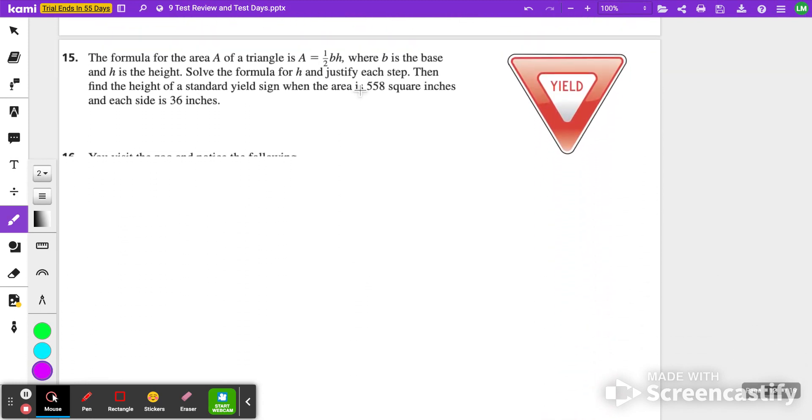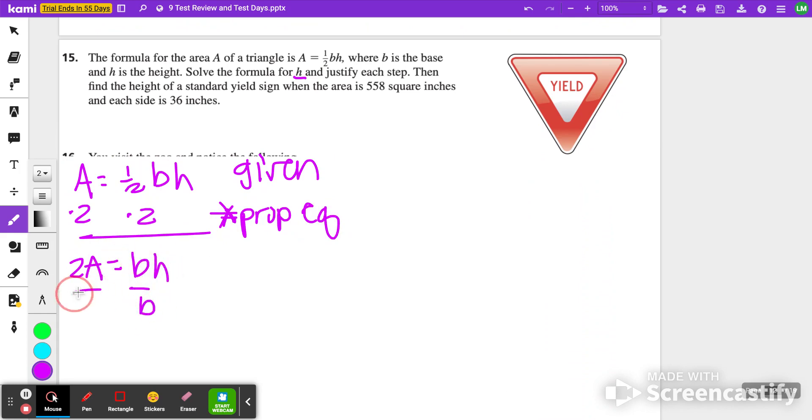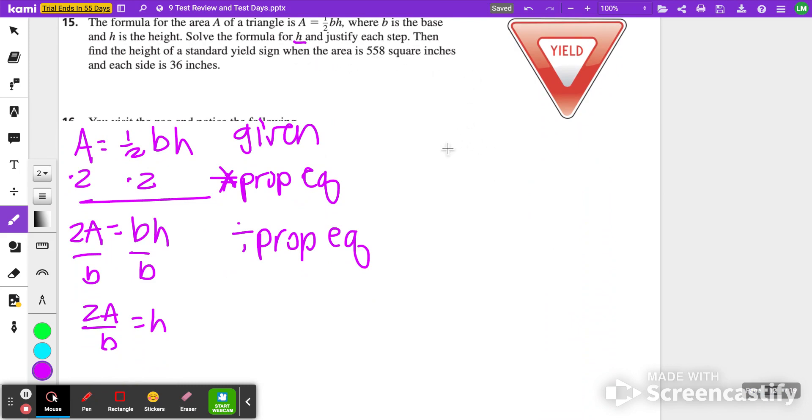For number 15, the formula for area of a triangle is A equals one-half bh, where b is the base and h is the height. First, we're going to solve for h and justify each step. Here's my given. Then I'm going to multiply both sides by 2, this is the multiplication property of equality. So I have 2A equals bh, and then finally, I'm going to divide both sides by b, that's the division property of equality. So 2A divided by b equals h. Now I can solve for the height if the area is 558. So 2 times 558 divided by 36 equals 31 inches.